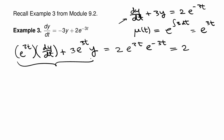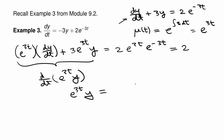Because this is the magic function, we have the left-hand side as the derivative with respect to t of e^(3t) times y. Now we can integrate both sides with respect to t. When we integrate the left-hand side, we get e^(3t) times y. When we integrate the 2, we get 2t, plus an arbitrary constant k on the right-hand side.